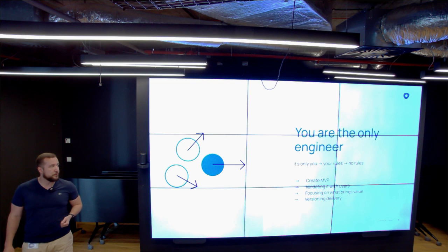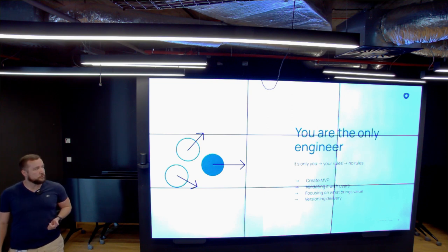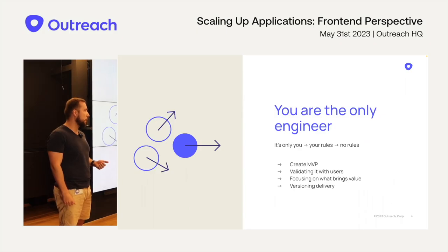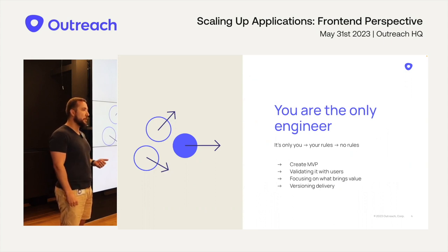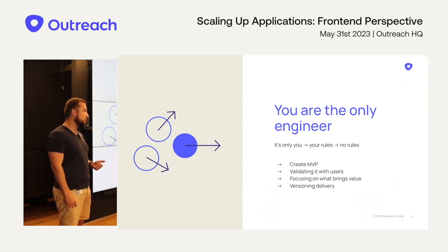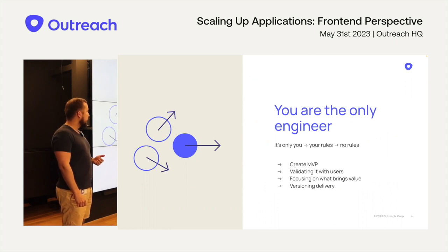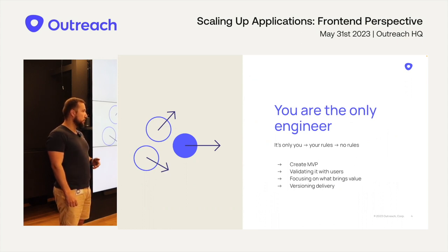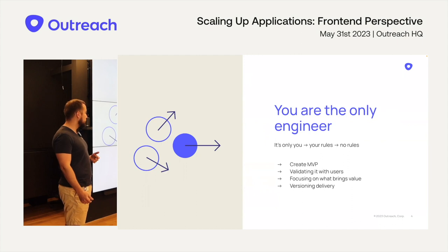When you are the only engineer, you should focus really on creating an MVP — minimum viable product. You shouldn't spend too much time writing 100% test coverage because the idea can change multiple times and you need to start validating this idea with your customers or users. Spending time on custom lint rules or heavy tests can postpone the moment when you start validating with users.